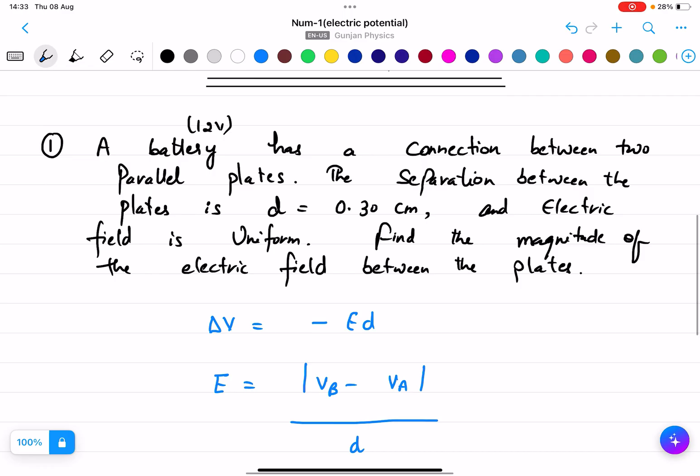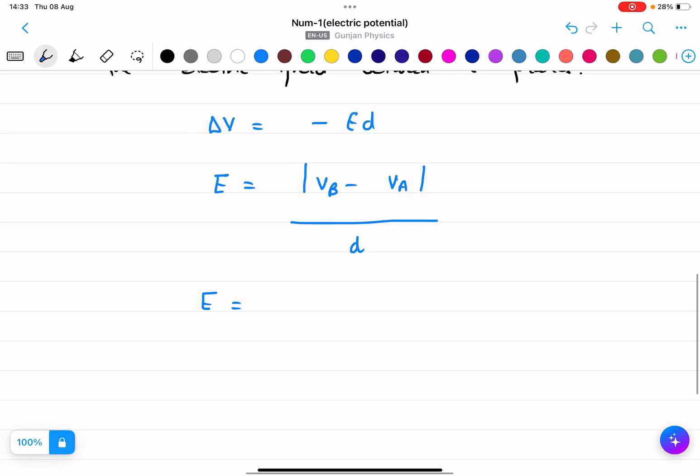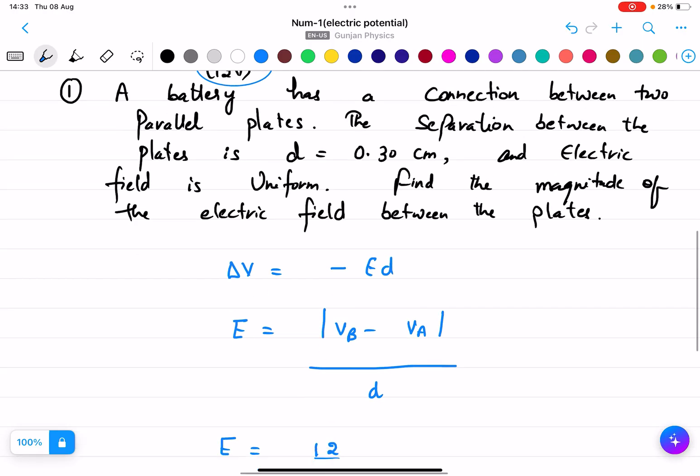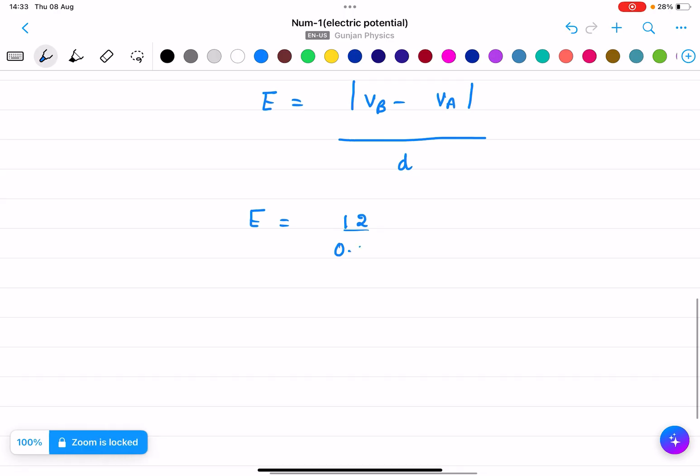What is VB minus VA? It is given as 12 volts here. So it is 12 over d. What is d? 0.30 centimeter, that means I can write 0.30 × 10^-2 meter, right?